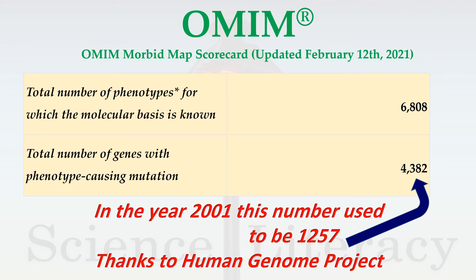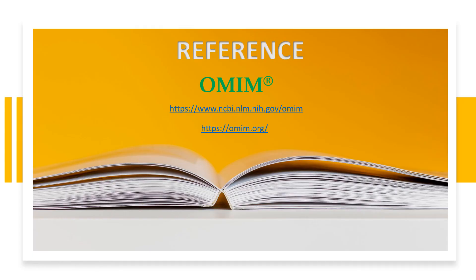In the year 2001, there were only 1,257 changes in genes known. In the second week of February 2021, this number had risen to 4,382. Fortunately, these changes lead to 6,808 phenotypes, meaning changes in one gene can be manifested in more than one way. There are two websites for OMIM. You can learn more by surfing these websites.